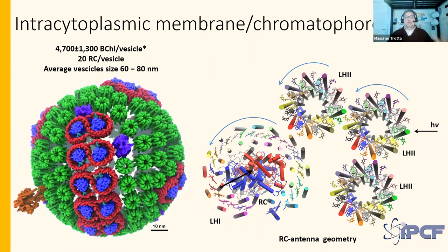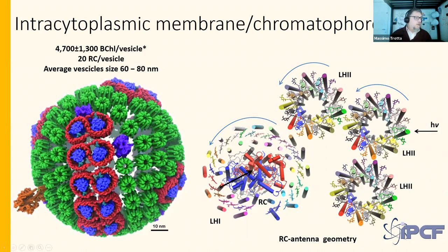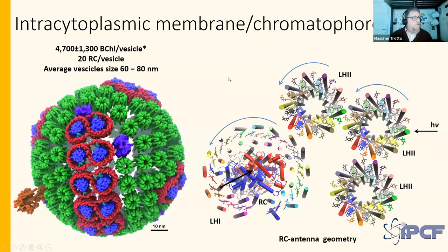The ATPase is an important protein that uses the energy converted by the reaction center to synthesize ATP — adenosine triphosphate — which is the exchange currency for energy in biological systems. If you have ATP, you can do almost any reaction in a biological system. If you open up the vesicle and make it flat, you can see a simpler representation with the reaction center, the LH1 surrounding it as a circle, and the LH2 molecules — 'LH' stands for light harvesting.